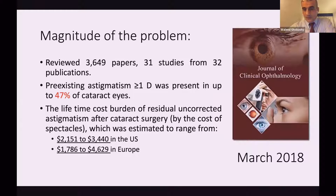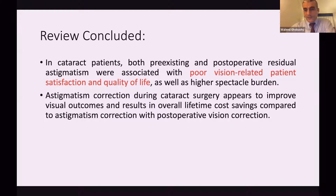This tremendous work found that pre-existing astigmatism of more than one diopter is present in almost half of cataract patients. They also calculated the burden of residual uncorrected astigmatism: up to 3,000 US dollars in the United States and up to 4,000 euros in Europe. The review concluded that patient satisfaction is much less with present astigmatism post-surgery, and the cost to correct astigmatism after surgery is much higher.